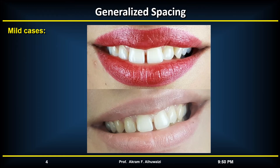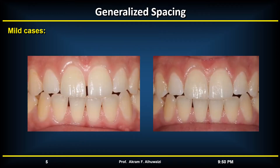In milder cases, it may be wiser to encourage the patient to accept the spacing and avoid orthodontic treatment altogether. Or if the teeth are narrower than average, acid-etch composite additions or porcelain veneers can be used to widen them and thus improve aesthetics.